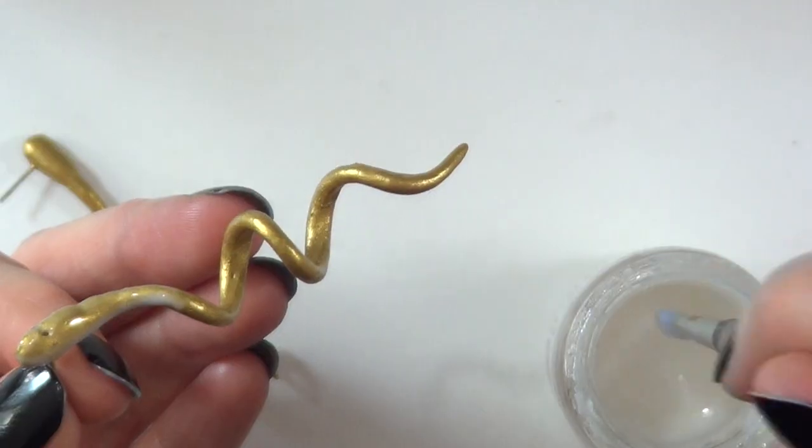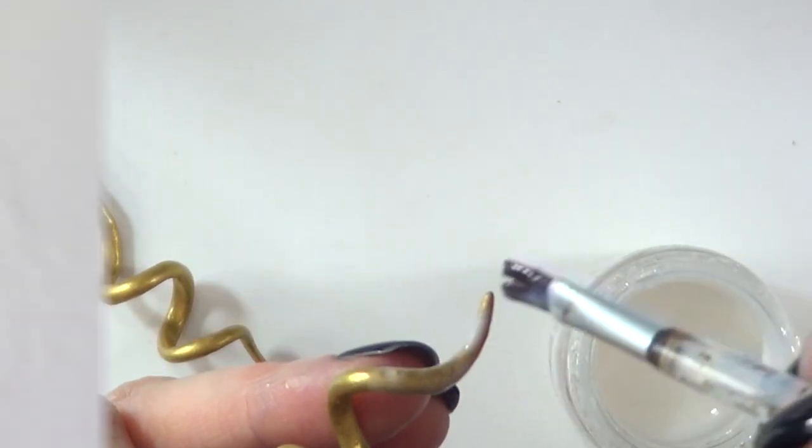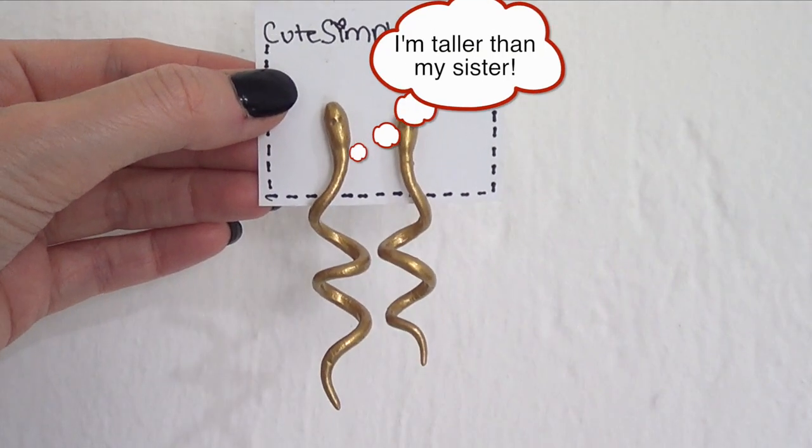Because I wanted them to be a bit shinier, I just added a coat or two of this gloss. I'm just going to wait for them to dry, and this is pretty much it for this idea. They are so easy.